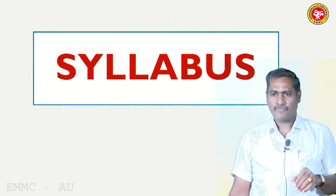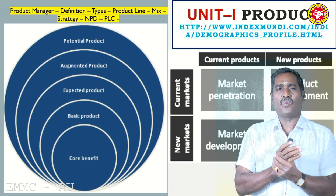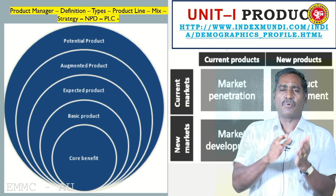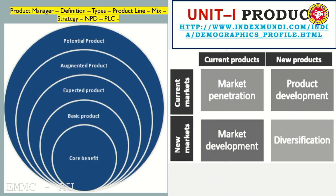Now moving to the syllabus: the first unit is on product. How are products made? What are the classifications — staple product, durable product, non-durable product? How do we identify these products and how are they offered to meet customer requirements? The product manager decides about all categories; each product classification has its own way of handling things, including industrial products like raw materials, consumables, and finished products.